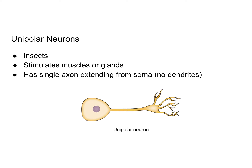Unipolar neurons are only associated with insects, and they are involved in stimulating muscles or glands in the insects. They have the cell body, otherwise known as the soma, and they have a single axon extending from the soma. There are no dendrites, and then there are these axon terminals.